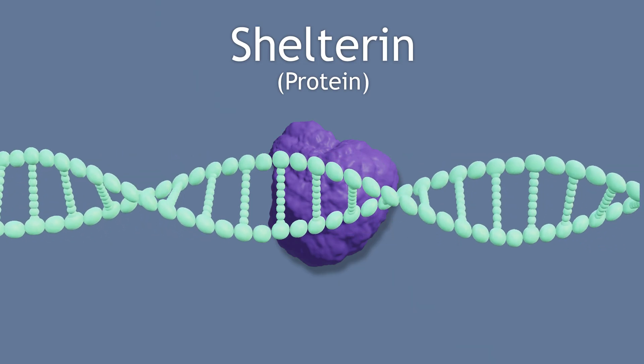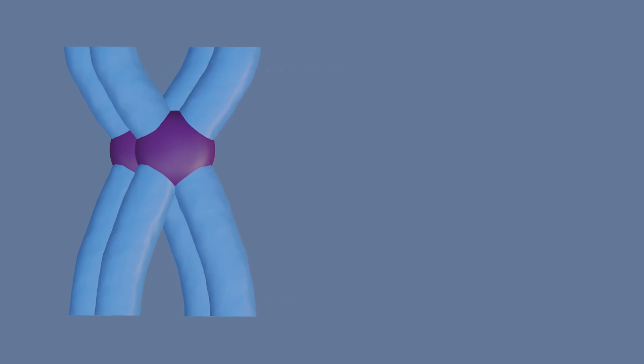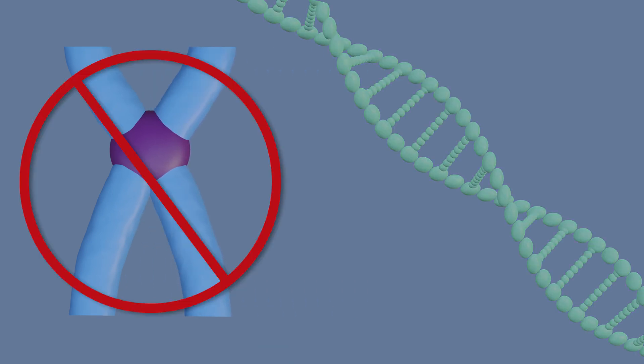which wrap around shelterin, a protein, to protect the telomere ends from fraying. The telomere's job is to prevent chromosomes from fusing with other chromosomes and losing important genetic information.